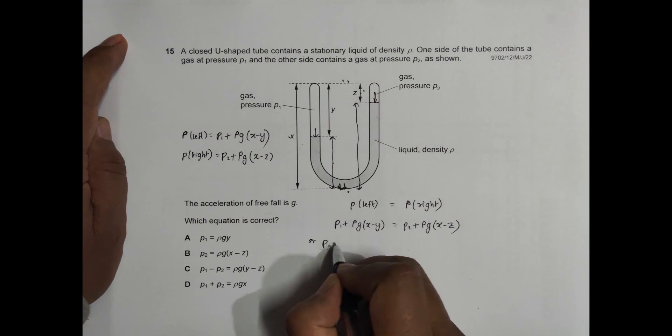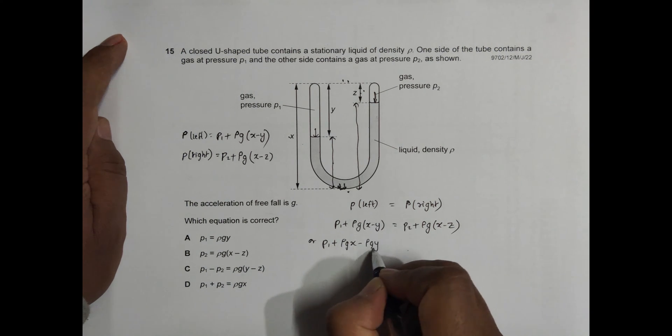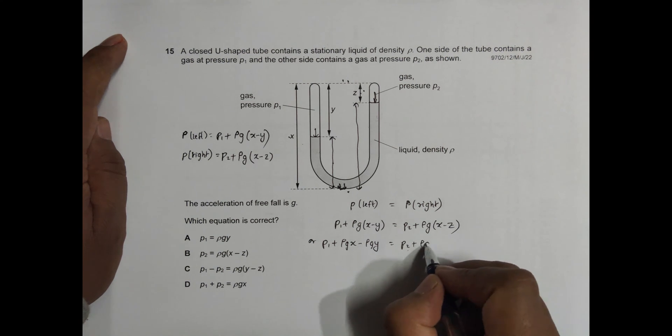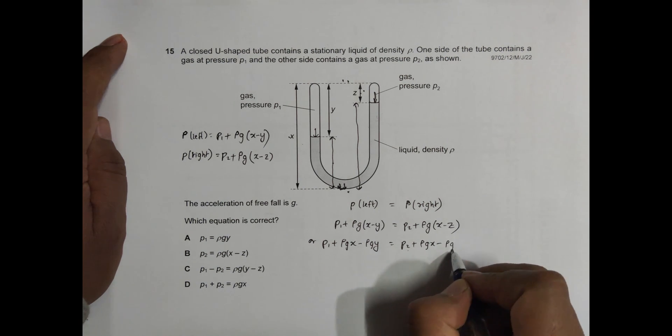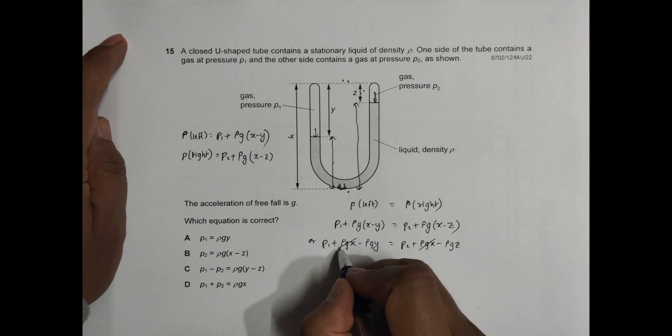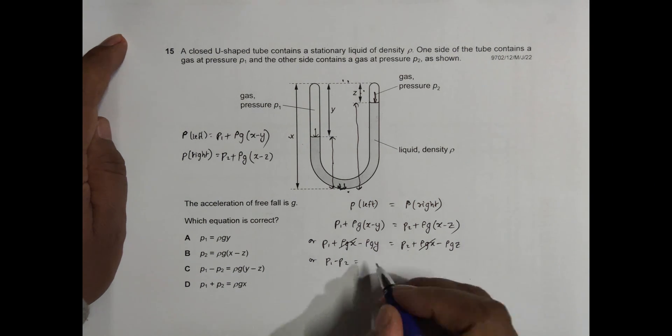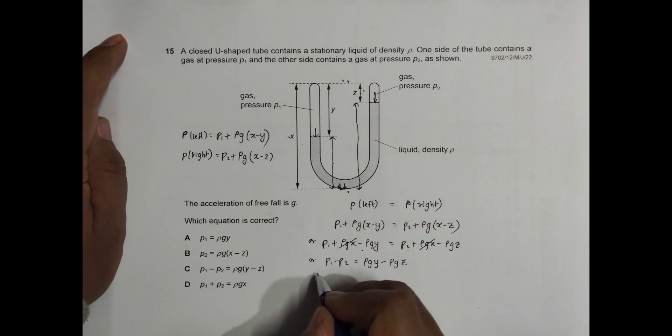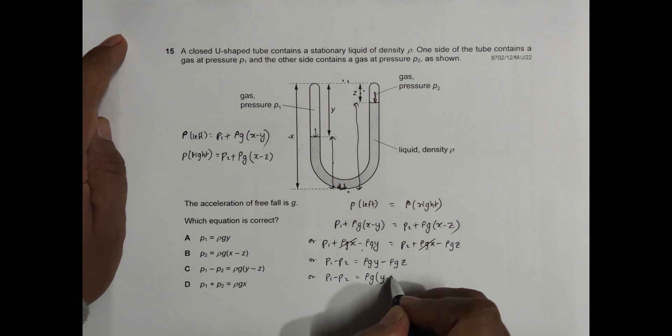So it is P1 plus ρgx minus ρgy equals P2 plus ρgx minus ρgz. The ρgx terms cancel, giving us P1 minus P2 equals ρgy minus ρgz. This gives us P1 minus P2 equals ρg(y - z).